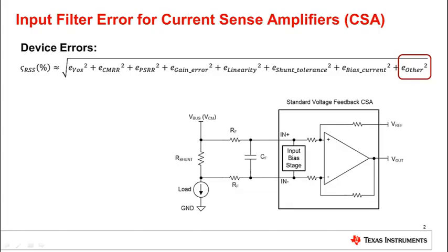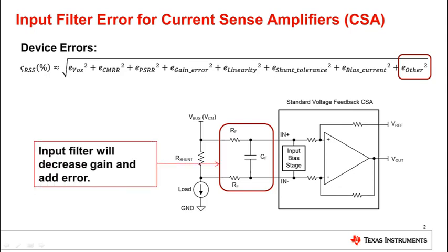As a review, total current sensing error is largely due to inherent device errors such as CMRR and offset. However, when significantly large input resistors are placed at the input pins, there will be a large increase in gain and offset errors for many current sense amplifiers. Overall, an input filter will decrease gain and add error.